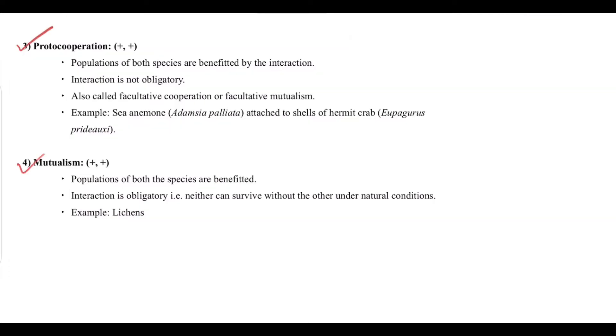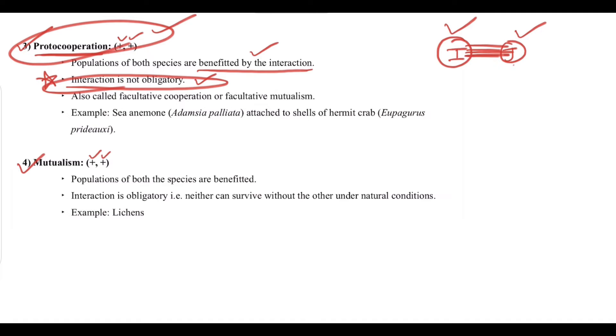Next we have protocorporation and mutualism, nearly related but with very significant difference. Both are positive positive. Protocorporation: populations of both species are benefited by the interaction, but interaction is not obligatory. This is the difference. In protocorporation, both are benefited but the interaction is not obligatory. They can live independently, which denotes protocorporation. This is also called facultative cooperation or facultative mutualism. For example, sea anemone attached to the shells of hermit crab.